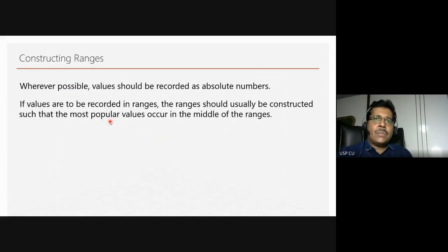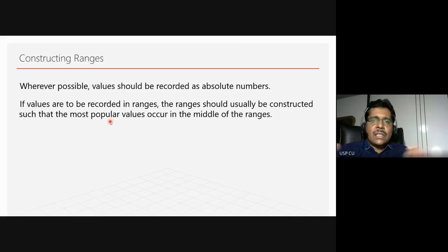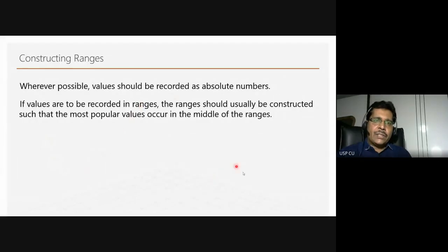At times, where absolute numbers are not possible, we provide ranges — for age, income, or other variables. We have to ensure that the most popular values fall in the middle and the other ones are at the extremes, creating the range in a manner where the most common responses fall in the middle. This is important for achieving a kind of normal distribution.